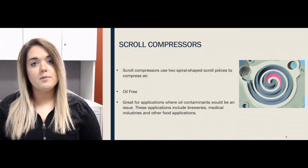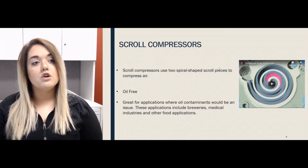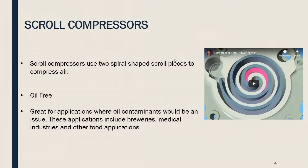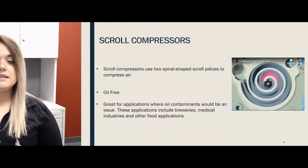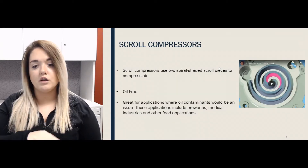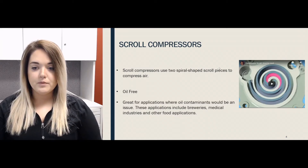The other type of industrial air compressor we carry is the scroll compressor. Scroll compressors compress the air using two spiral-shaped scroll pieces. One scroll is stationary and the other fits inside it and is moved in a tight circular motion, pressing against the inside of the stationary scroll and continuously moving the air along toward the center.